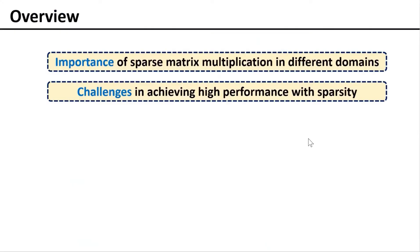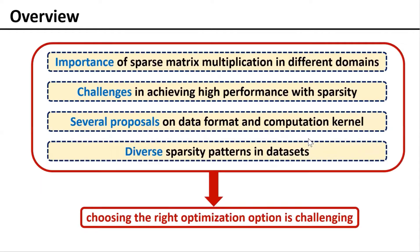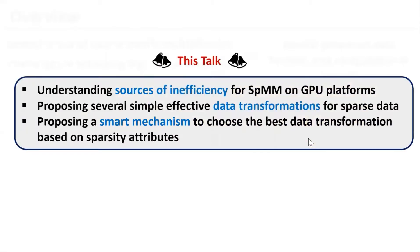Sparse matrix multiplication is integral to many applications in different domains. However, sparsity complicates achieving high performance. Several data formats and computational kernels have been proposed, and several proposed optimizations and diverse sparsity patterns make choosing the right option quite challenging. In this talk, first we understand sources of inefficiency for SPMM on GPU platforms, then we will propose simple data transformations for a common sparse data structure, and we will present a smart mechanism that can predict the right data transformation based on the sparsity attributes.